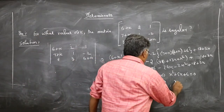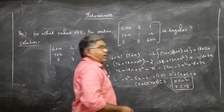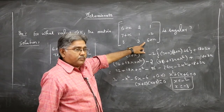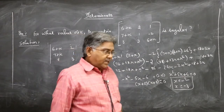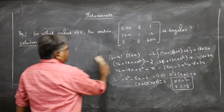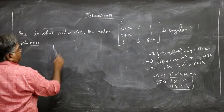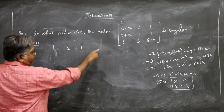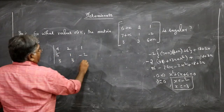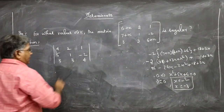From this, we get x = -2 and x = -3. These two values make the matrix singular. If time permits, you can cross-check: take x = -2 and substitute into the matrix, giving determinant of [4, 2, 1; 5, 1, -2; 3, 3, 4]. This has to give you 0, which would confirm the answer is correct.